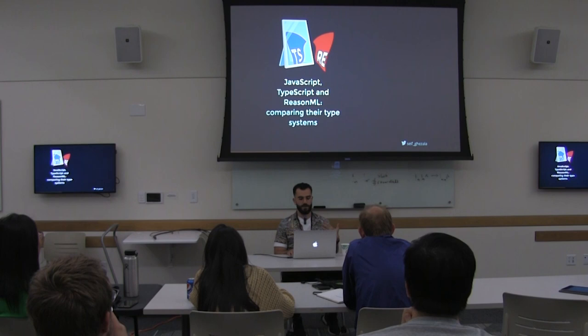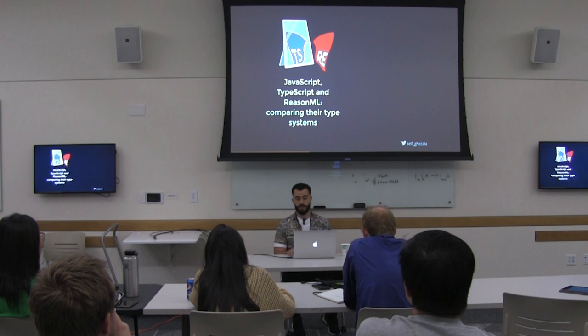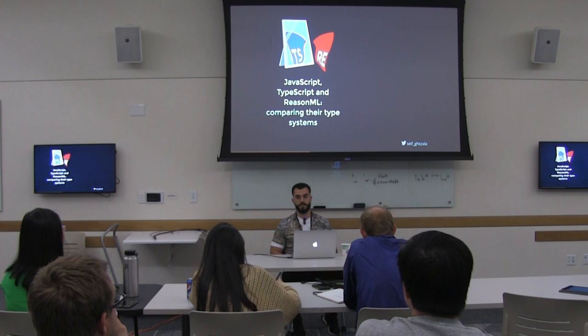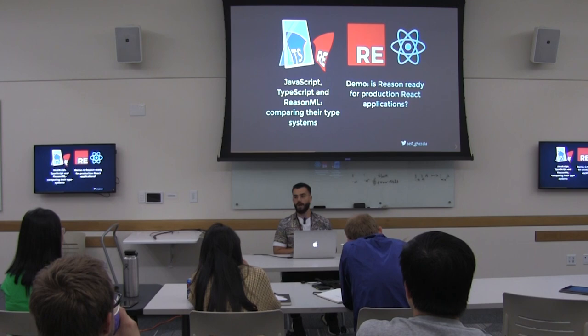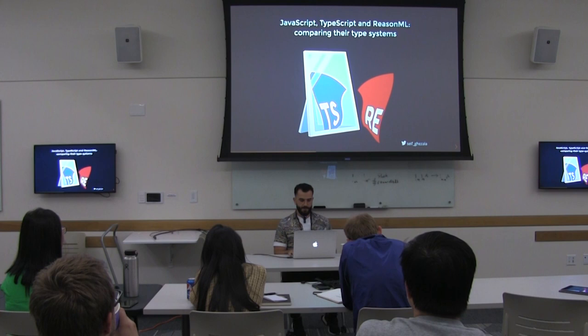What we're going to do is: in the first part, we want to compare three alternatives you can use to write front-end applications — JavaScript, TypeScript, and ReasonML. We'll see briefly what distinguishes ReasonML from the other two. And in the second part, which is longer, we're going to build something together with Reason and React, so that you get a feel about how ReasonML feels in production when you build things.